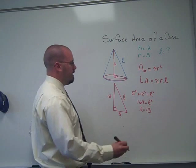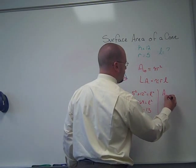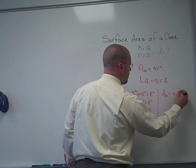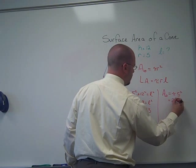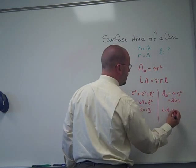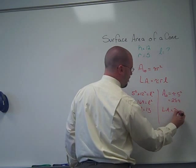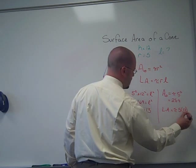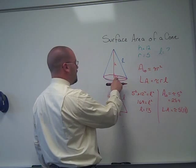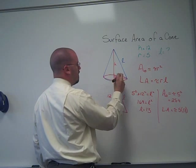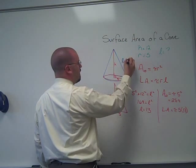Now we can find the area of our base, and then our lateral area. Pi times the radius, 5, times the slant height, which we found was 13.